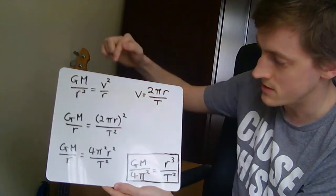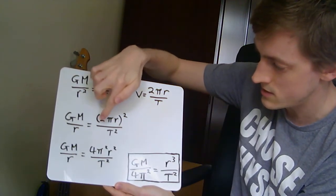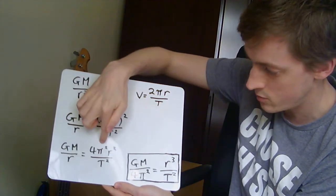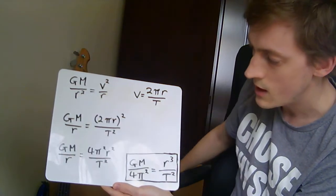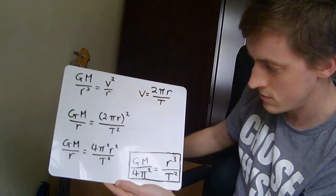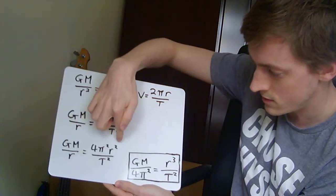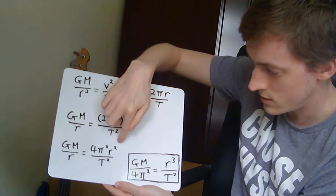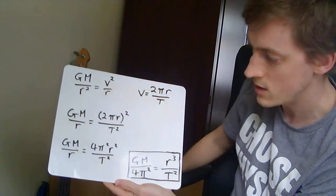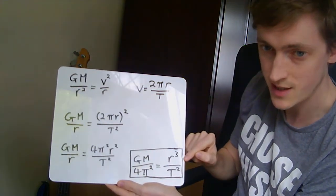So there's our next line. Now all I need to do is expand this out. 2πr all squared is going to be 4π² r². So we end up with GM over r equals 4π² r² over T². And finally, we can do a little bit of rearranging to end up, just by multiplying both sides by r, with r³ over T² equals GM divided by 4π², which is this equation here.